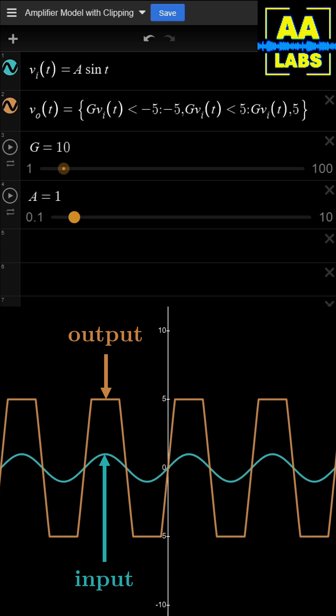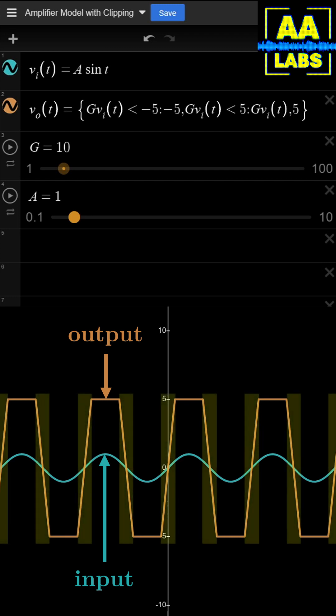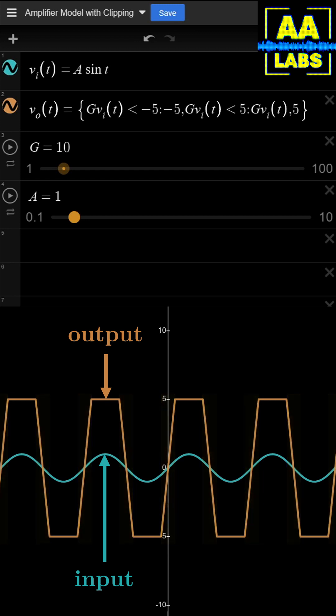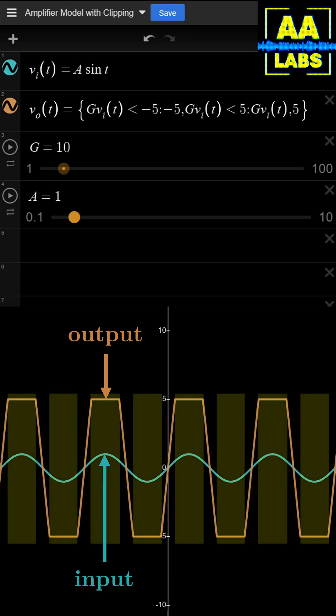On the output, the shape of the sinusoid is only faithfully represented for the parts of the cycle when the magnitude of the input is less than a half volt. When above this limit, the output gets pegged to plus or minus 5 volts. The output is said to be clipped.